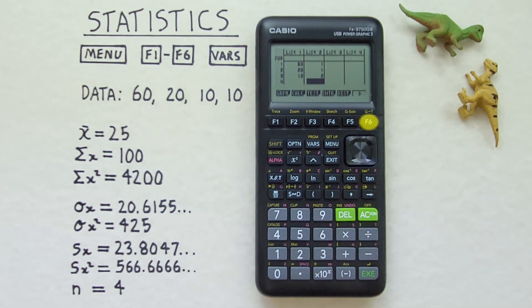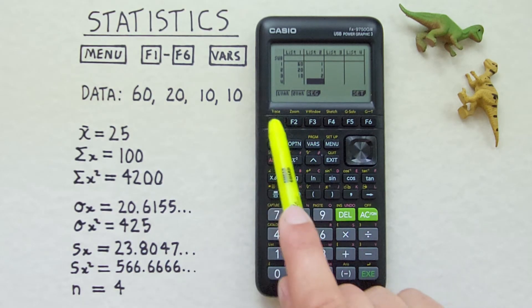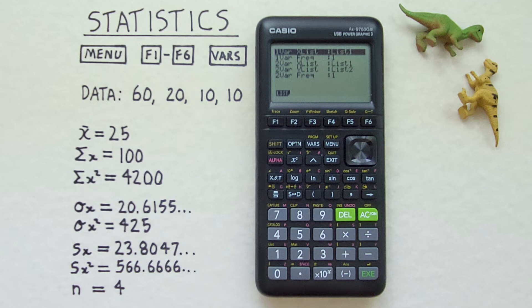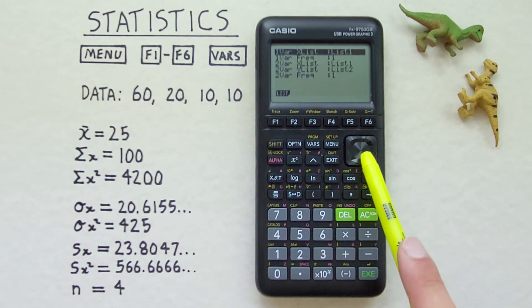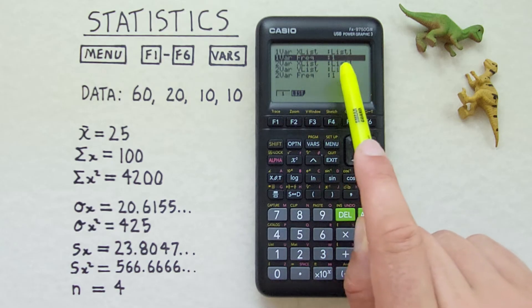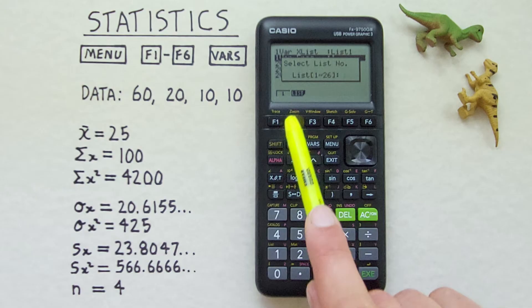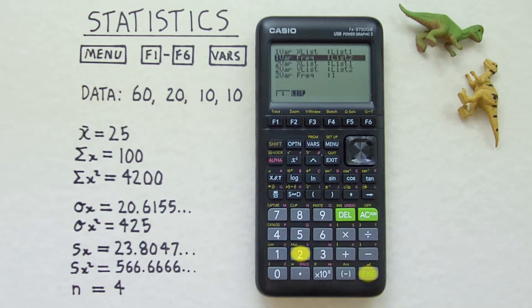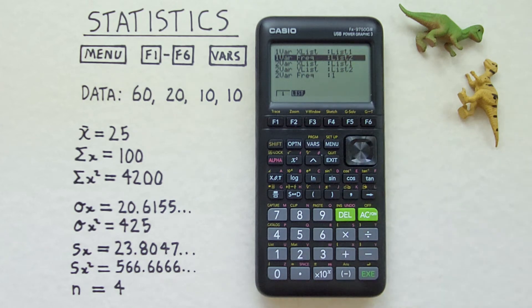Now what we want to do is scroll over to calc again and press F2. But before we choose one var here we need to go to F6 or set. This is where we set what each of our lists mean. For our x list we have list 1 which we don't want to touch. But if we scroll down we see our one variable frequency is listed at 1. That means each number in list 1 occurs once. But we want to change that to our frequency. So if we press list here F2 and it'll ask us to choose a list. We'll choose list 2. Select that. There we go. List 1 is our variables. List 2 is our frequency. We can exit out of that.